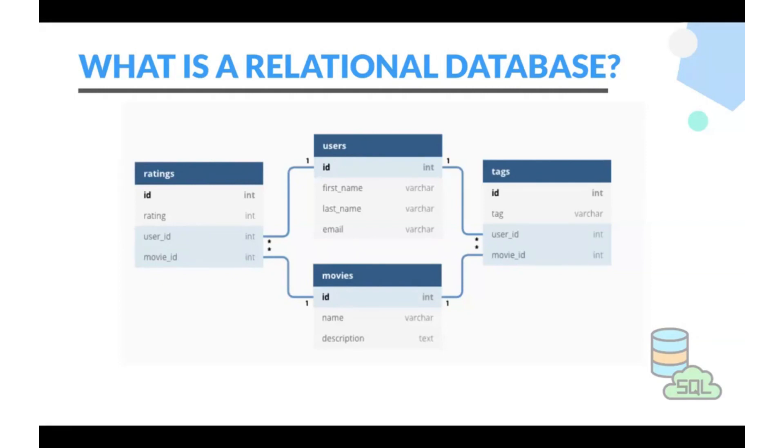We say RDBMS, relational database management system, consists of these databases, relational databases. So these relational databases have tables which are interconnected to each other. They have some relation with each other. That's what relational databases. So this is one relational database.